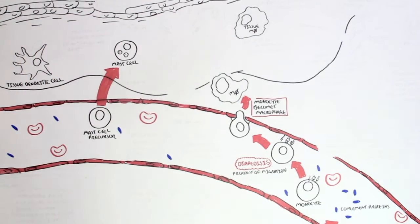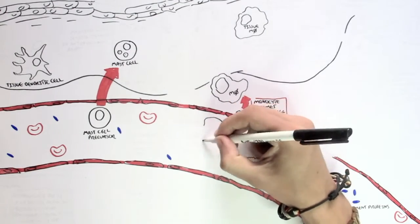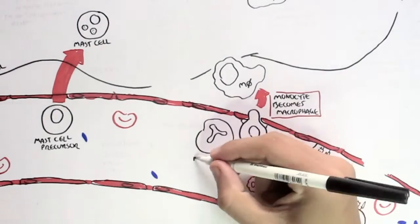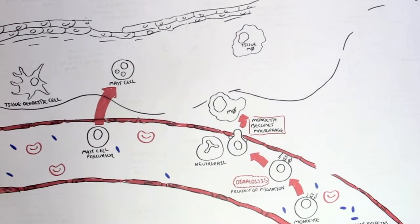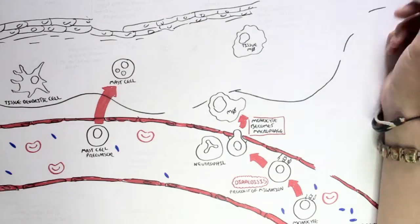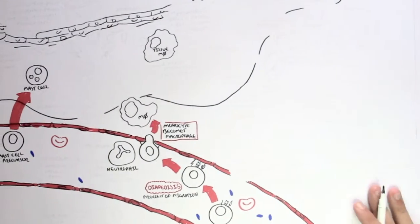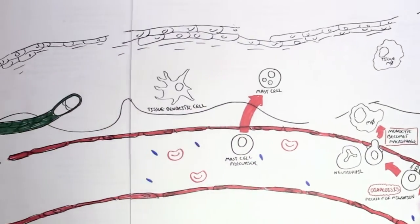So in the tissues, we can find different cells. We can find tissue macrophages which migrated. We can also find immature dendritic cells which migrated, and they're still immature because they have not been activated. They are not activated because there is no invasion from a pathogen.